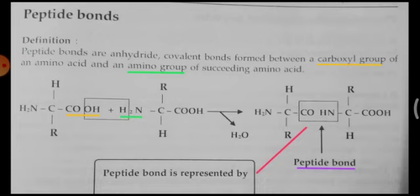You can see the illustration; along with that you have to follow the description. In the illustration, there are two amino acids before the arrow: first amino acid and second amino acid. After the arrow, you can see the peptide bond formed between the amino acids. And in the process below the arrow, you can see the loss of water, H2O. Anhydride means loss of water, as shown below the arrow.